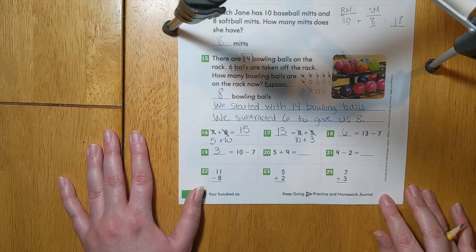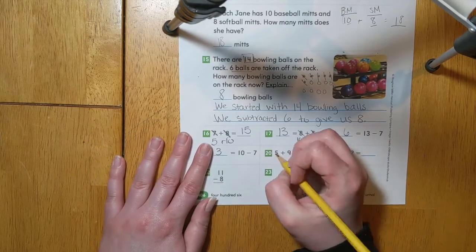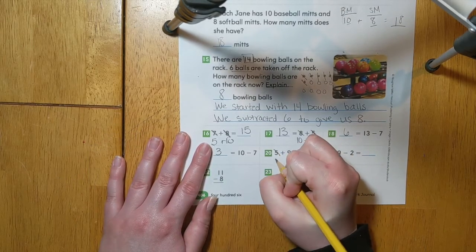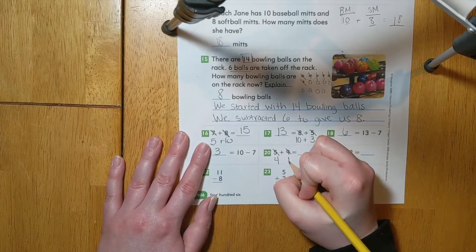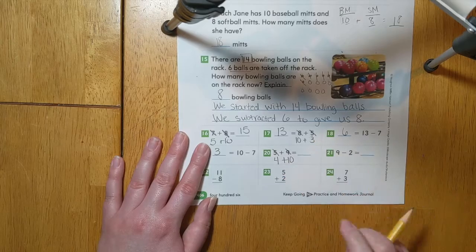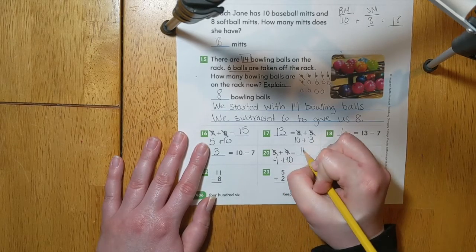For number 20, we can practice our make a 10 strategy. I'll borrow one number from 5, which makes it 4. And I'll bring that one next door to make it 10. And we know that 4 plus 10 equals 14.